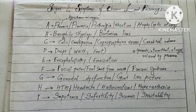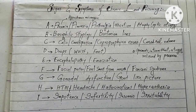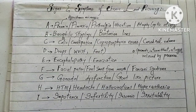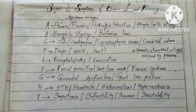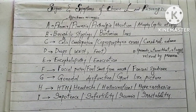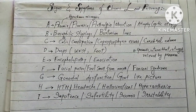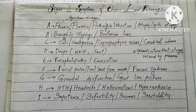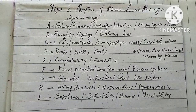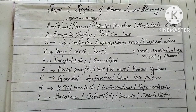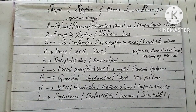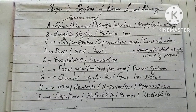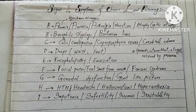E stands for encephalopathy — lead encephalopathy — characterized by headache, insomnia, hallucinations, ataxia, and insanity. There is also irritation.